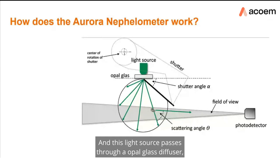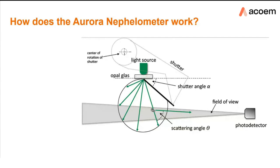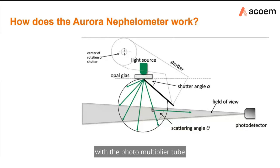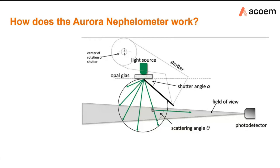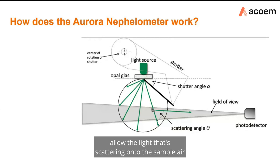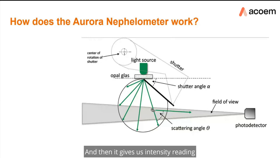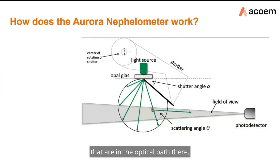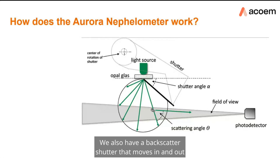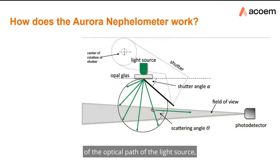The light source passes through an opal glass diffuser which gives its unique Lambertian distribution. The arrangement of the light source with the photomultiplier tube allows the light scattering onto the sample air to be detected, giving an intensity reading in relation to the amount of particulates in the optical path. There is also a backscatter shutter that moves in and out of the optical path, changing the integration angle of the nephilometer.